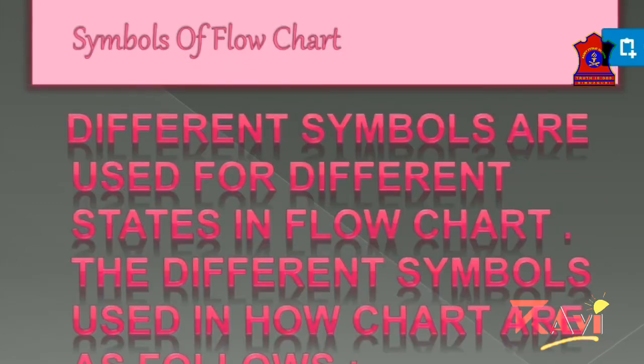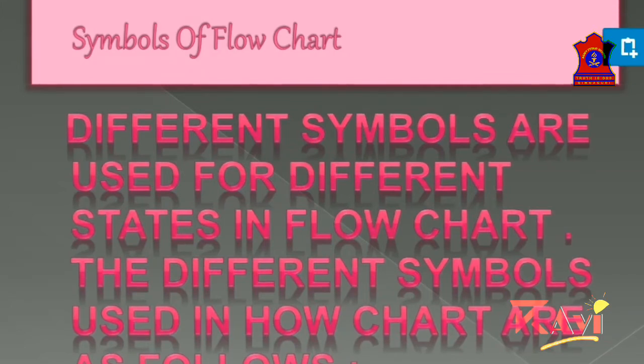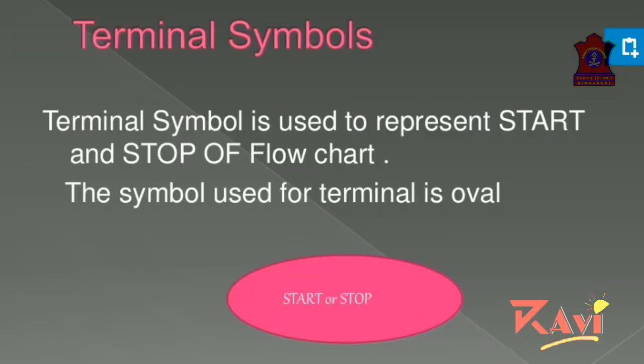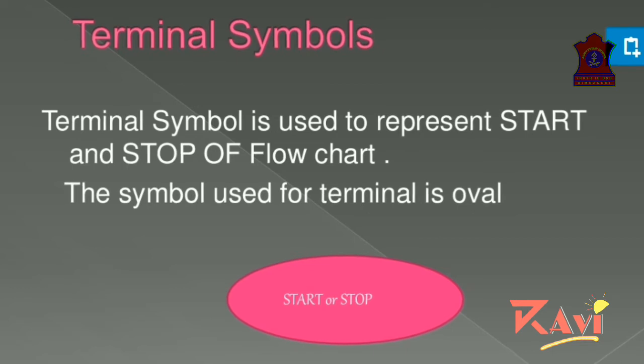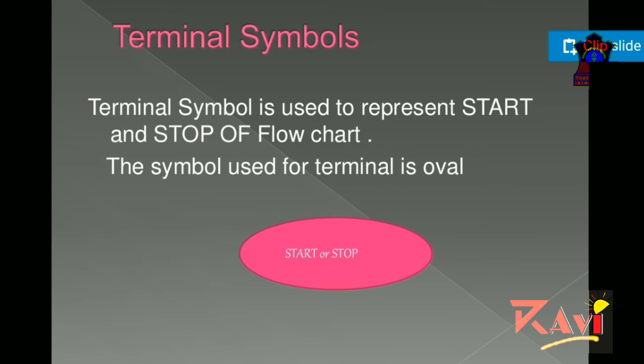Now we are going to learn different symbols or the basic symbols that are used while making a flowchart. So first is a terminal symbol. The terminal symbol is used to represent start and stop of flowchart. The symbol used for terminal is oval.